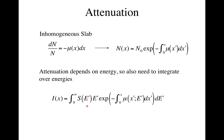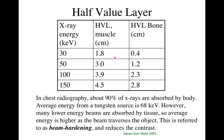Attenuation is also proportional to energy. You get much more attenuation at lower energies: it takes 1.8 cm of muscle to reduce photons by 50% at 30 keV, versus 4.5 cm at 150 keV. This is an issue because coming out of our X-ray source we have a whole spectrum of X-rays — a polychromatic beam.